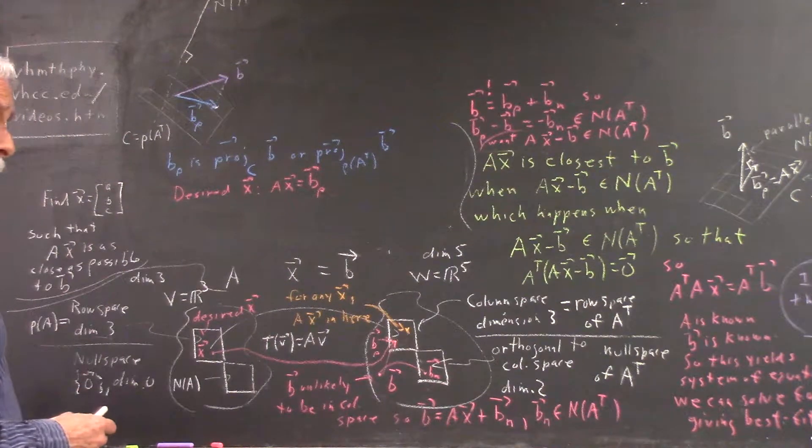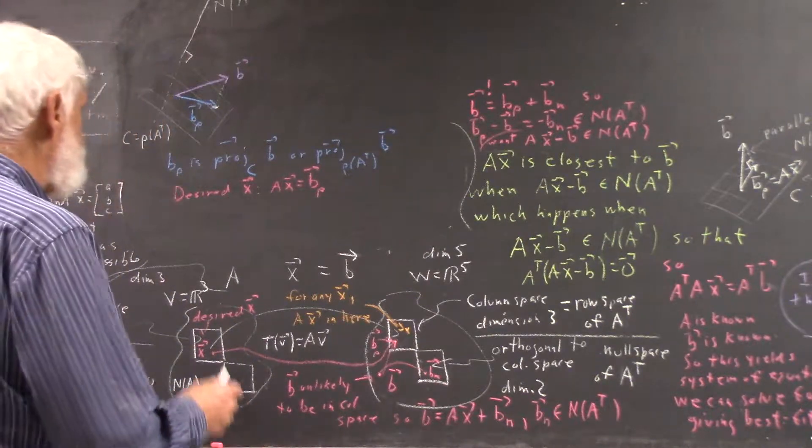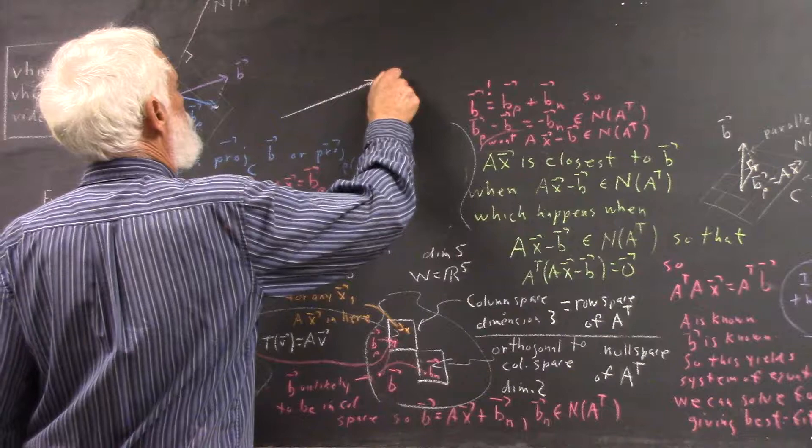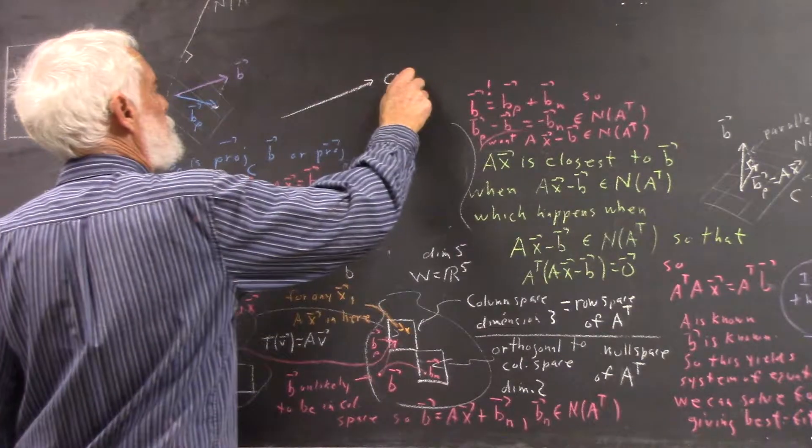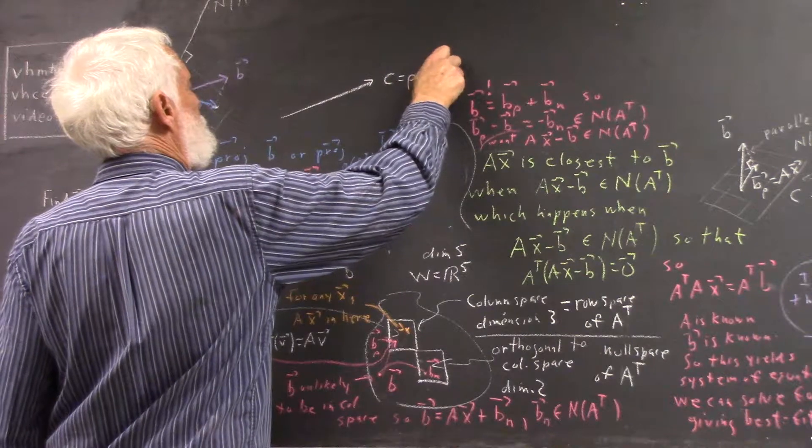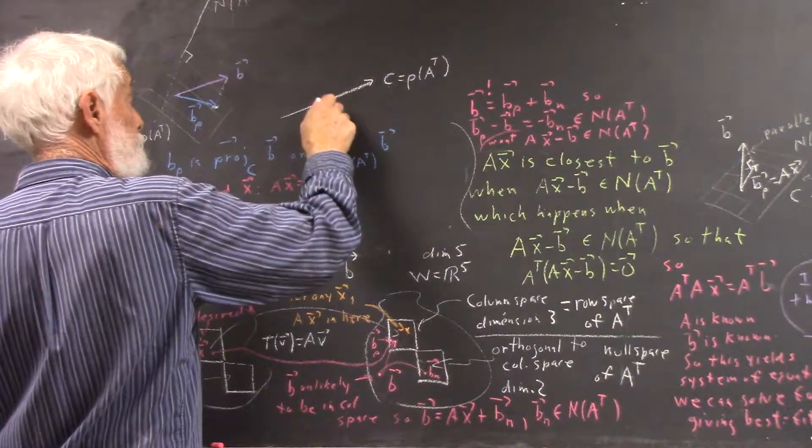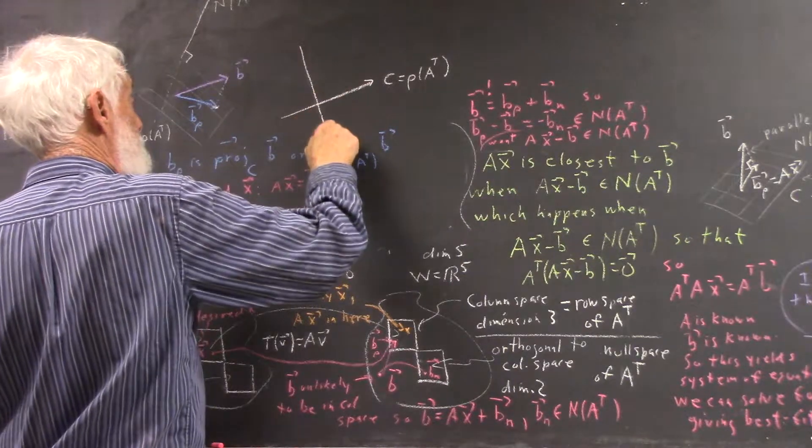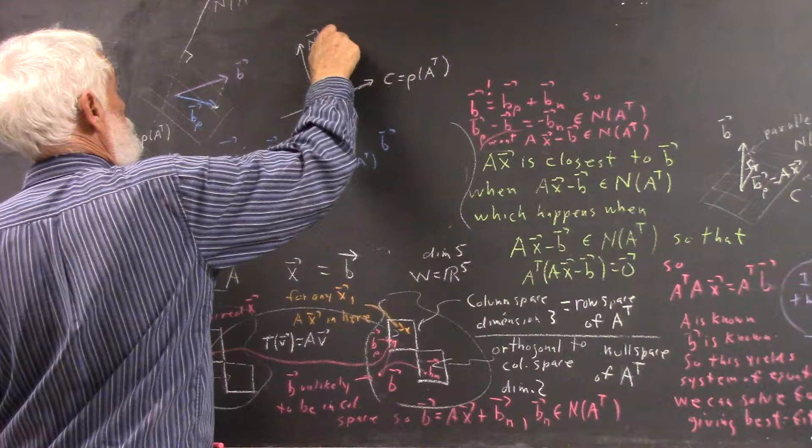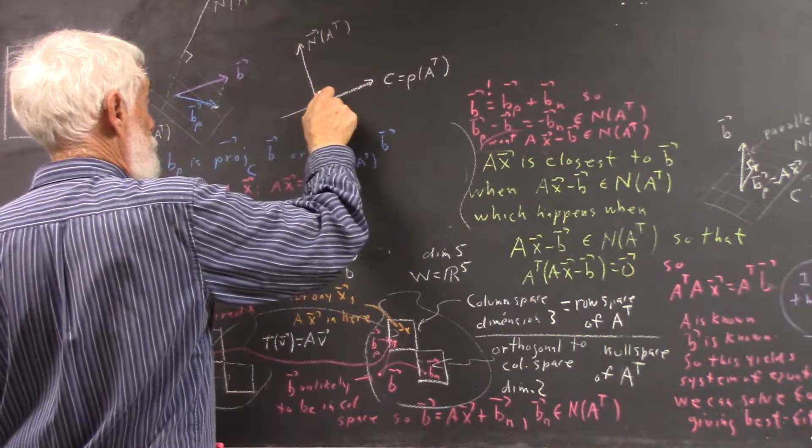So there's no reason, except that it's maybe a little misleading, that we couldn't represent our column space by a line, and our null space. So there's no reason for the null space of A transpose by another line, orthogonal.